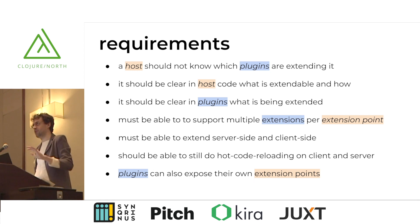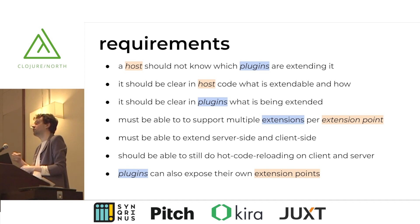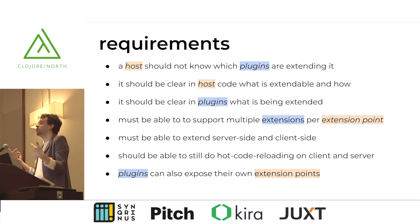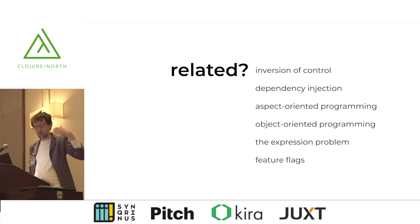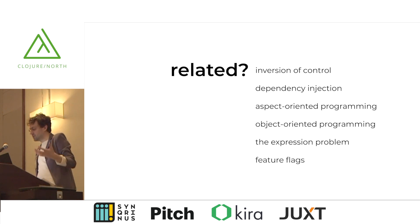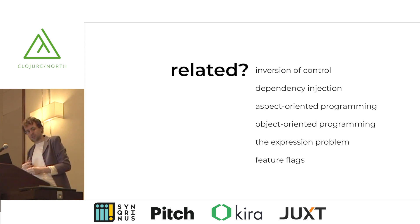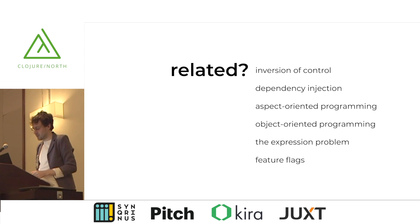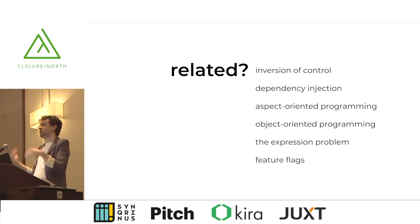We also wanted to support existing workflows like hot code reload with Figwheel. Ideally you could turn plugins on or off at runtime — we don't have that working in production yet, but at least in development you can turn plugins on and off without completely rebuilding application state. We thought about related concepts: inversion of control, dependency injection, aspect-oriented programming, object-oriented programming. It's kind of like the expression problem — do you organize things in terms of verbs or nouns? And this idea of feature flags taken to the extreme, where we organize all our code around features.